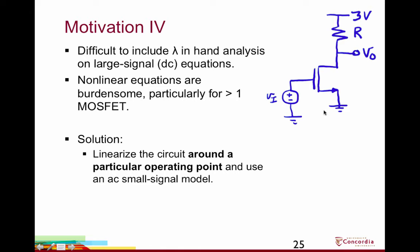The key takeaway from this motivation is that we can find gain and output signals due to input signals using large signal equations — equations like I_D equals some constant times (V_GS minus V_T) squared. However, it can be difficult to include lambda in hand analysis, and these nonlinear equations are very hard to solve with more than one MOSFET. The solution is to linearize the circuit around a particular operating point and use an AC small signal model, after which we can use matrix methods for solving the resulting linear equations.